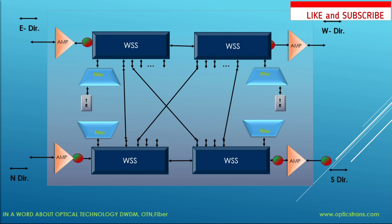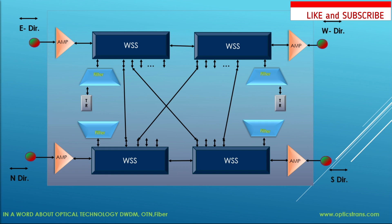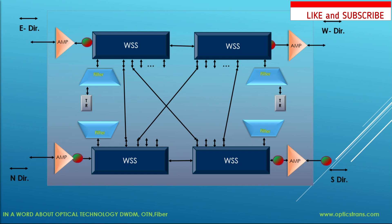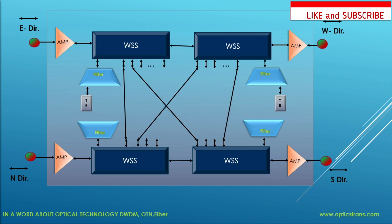Now we can transmit the signal in any direction — east to north, north to west — just by making a cross-connection, which we can do remotely. That is why we call this a Reconfigurable Optical Add-Drop Multiplexing configuration — ROADM. Using ROADM, we can make network changes quickly, saving time with no site visit cost and avoiding manual work every time, since the fiber connections are a one-time task. We can also connect more WSS ports for six, seven, or eight directions.